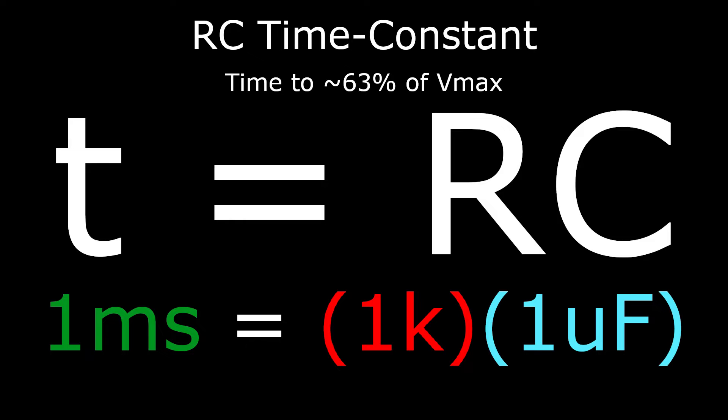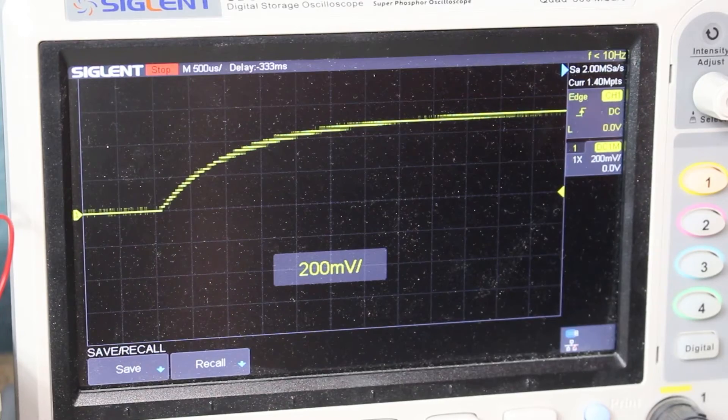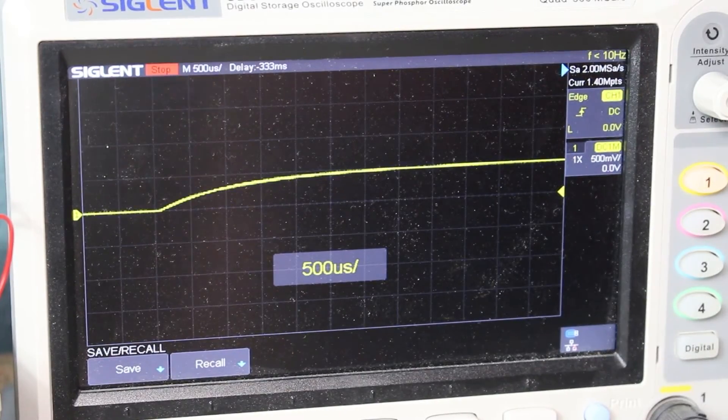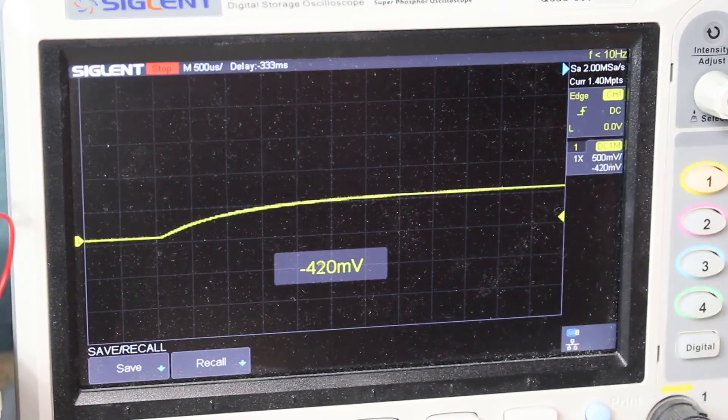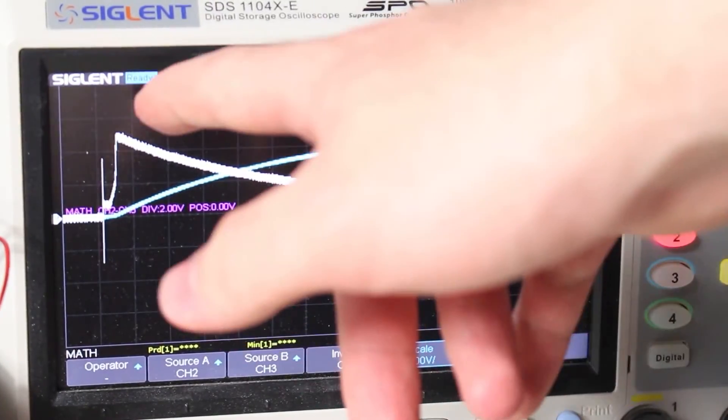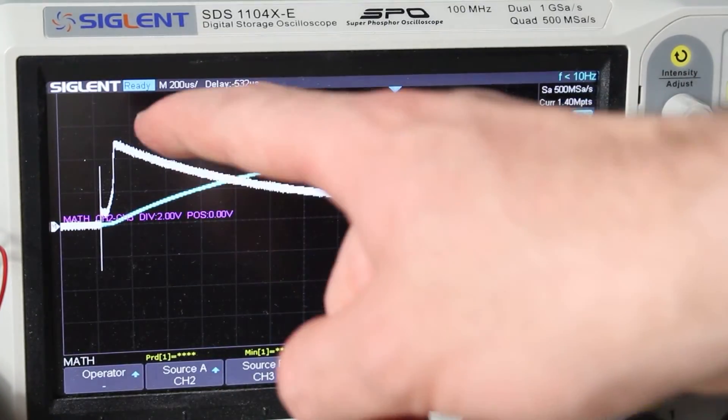I've already told you about how capacitors will block DC from passing through them, so let me show you some proof of that. I have already shown you how an RC circuit's voltage will level out over time. The same thing happens with current, just in the opposite direction. On our oscilloscope, the current is the white line. Once the voltage has reached its maximum, no more current can flow through the capacitor.